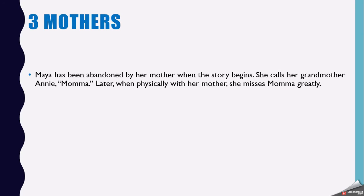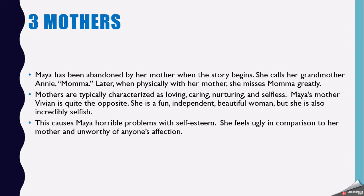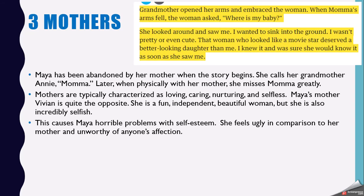Three mothers. Maya has been abandoned by her mother when the story begins. She calls her grandmother Mama. And later, when she's physically with her biological mother, she misses Mama greatly. Mothers are typically characterized as loving, caring, nurturing, and selfless. Maya's mother Vivian is quite the opposite — she's a fun, independent, beautiful woman, and she's incredibly selfish, at least at the beginning of the novel. The actions that Vivian takes really cause Maya horrible problems with self-esteem. She feels ugly in comparison to her mother and unworthy of anyone's affection, and this causes problems for her later on.